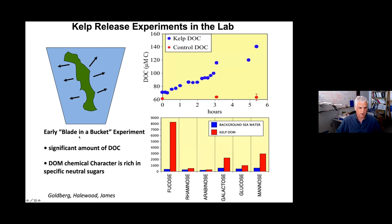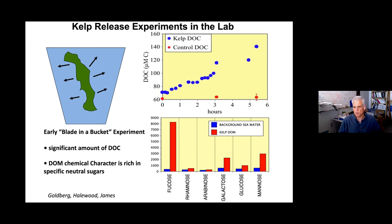We refer to this early experiment as the 'blade in the bucket' experiment — we took a blade, chopped it off, put it in a 20-liter container, and measured the change in DOC over time, looking at chemical characterization in the form of neutral sugars. Over about five to six hours, we see a big change in kelp-derived DOC relative to the water column water. The characterization of that DOC via neutral sugars was very different from background seawater — consistent with a lot of DOM being produced, though not a very realistic experimental design.